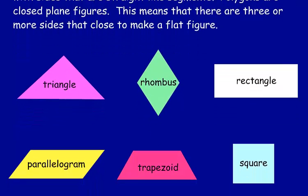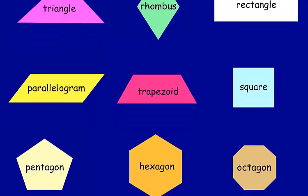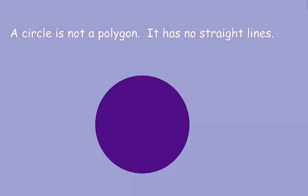Here are some common polygons. A circle is not a polygon because it has no straight lines.